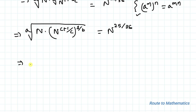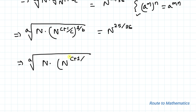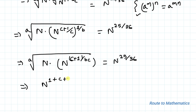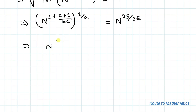This implies the ath root of n multiplied by n to the power (c plus 1)/(bc) equals n to the power 25/36. Again, this implies n to the power 1 plus (c plus 1)/(bc), all to the power 1/a, equals n to the power 25/36. Taking the LCM, we get n to the power (bc plus c plus 1)/(abc) equals n to the power 25/36.